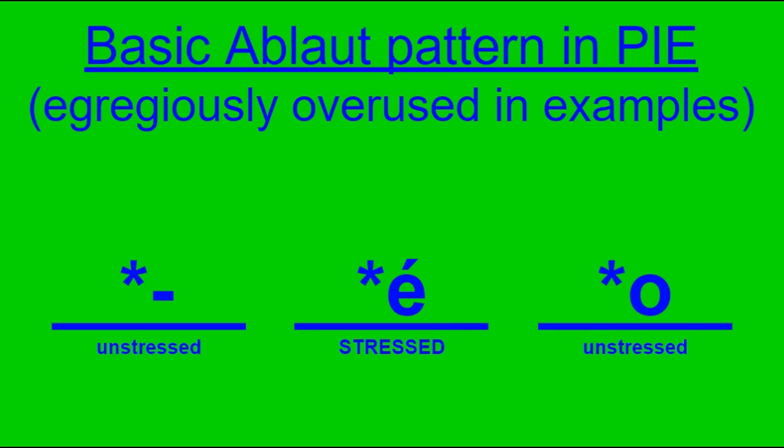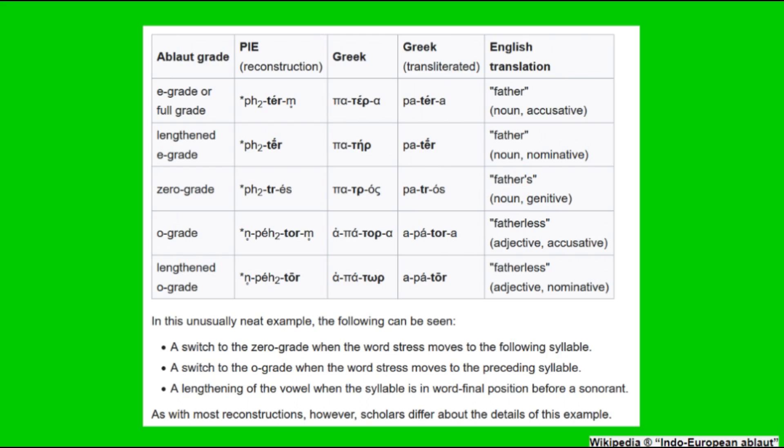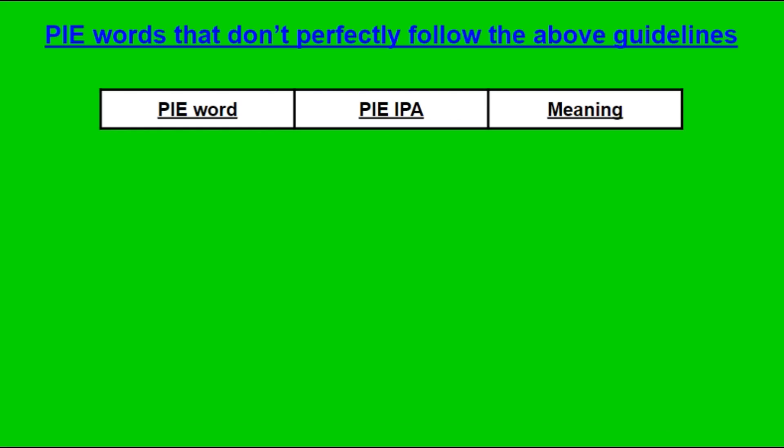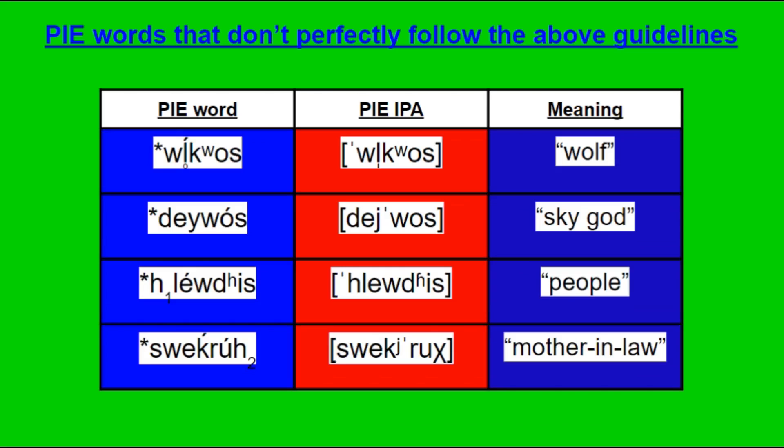One egregiously over-exemplified pattern in ablaut basically goes: e if it's stressed, zero if it's before the stress, and o if it's after the stress. The Wikipedia page on ablaut gives a table to show examples of this, but keep in mind the writers do correctly concede that this word is particularly well-behaved in both PIE and Ancient Greek. Normally it's not that clean with ablaut because you could have stressed zero grades, stressed o grades, post-stressed zero grades, unstressed e grades — you get the point.